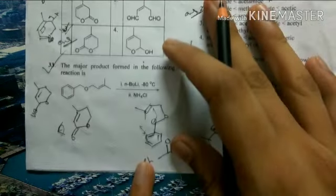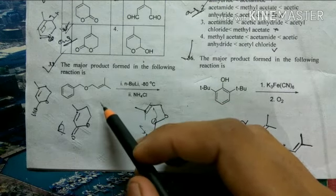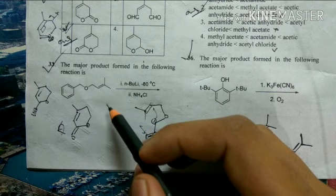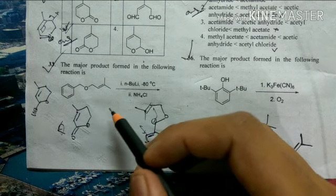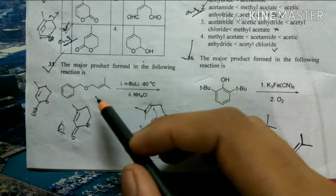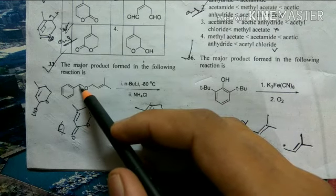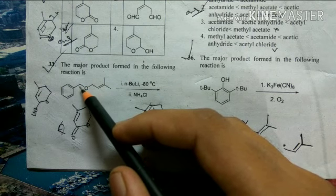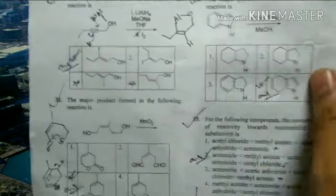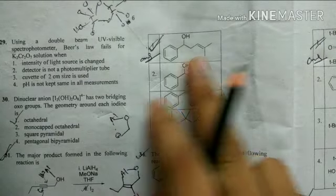The following reaction is the Wittig rearrangement. If you don't recognize it, recall your previous material. You have to decide where the anion will form — there is an allylic position and one benzylic position. The benzylic position is more acidic, so deprotonation will occur there. The correct answer will be option 1.